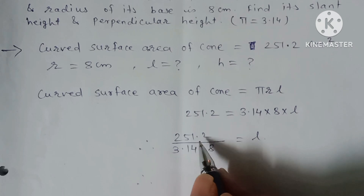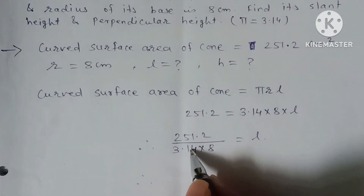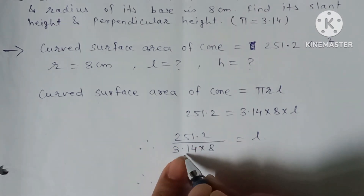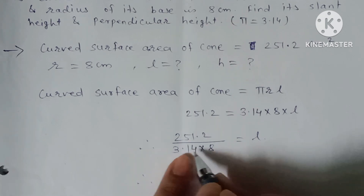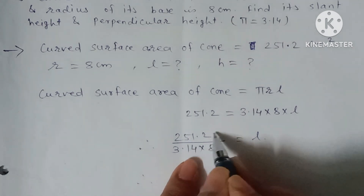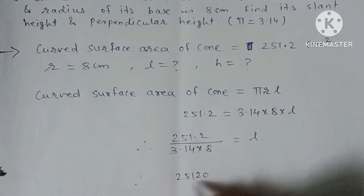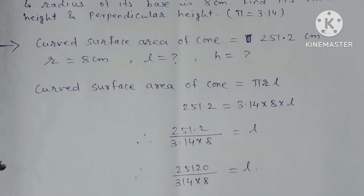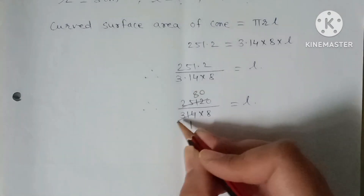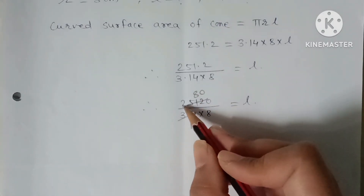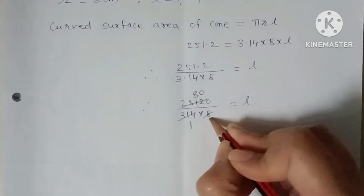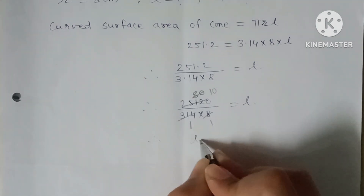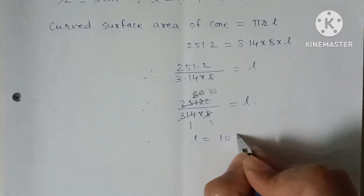Substituting: 251.2 = 3.14 × 8 × l. Moving 3.14 × 8 to the other side: l = 251.2 / (3.14 × 8). Removing the decimal: 25120 / (314 × 8) = l. Simplifying 314 × 8 = 2512, which divides into 25120 giving l = 10 cm.